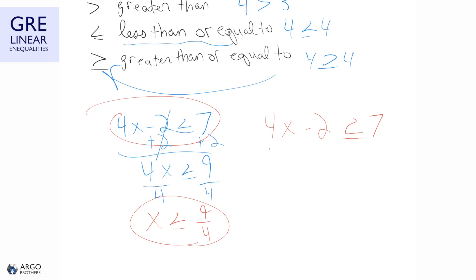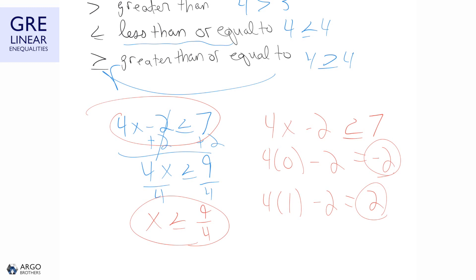Let's test some values. If we plug in 0 for x, we get negative 2, which is less than 7 — that works. If we try 1, we get 4 times 1 minus 2 equals 2, which is less than 7 — that works too. You can also try rational numbers like 2 fourths or irrational numbers like pi, and they would still work as long as they're less than 9 over 4.